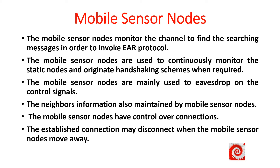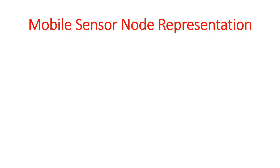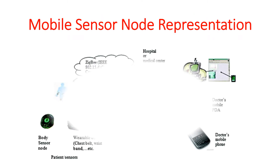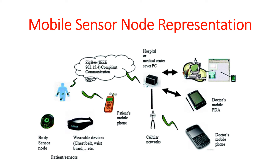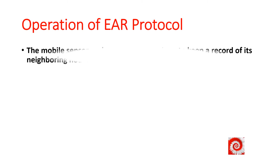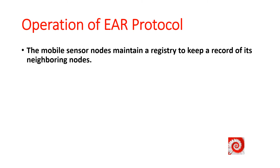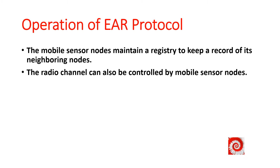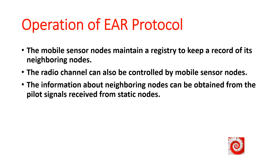The established connection may disconnect when the mobile sensor node moves away. A mobile sensor node representation is shown below. The mobile sensor nodes maintain a registry to keep a record of its neighboring nodes. The radio channel can also be controlled by mobile sensor nodes.